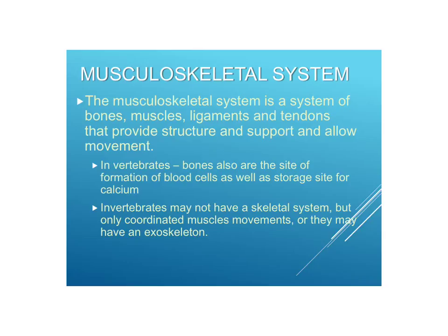Now the musculoskeletal system — lumping the muscular system with the skeletal system. It's a system of bones, muscles, ligaments, and tendons that provide structure and support to the organism and allow it to move. In vertebrates, bones are also the site of formation of blood cells in the bone marrow, and a storage site for calcium. In invertebrates, there might not be a skeletal system but only coordinated muscle movements, or they may have an exoskeleton.